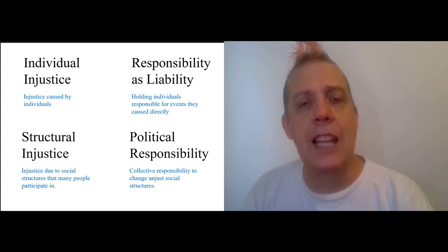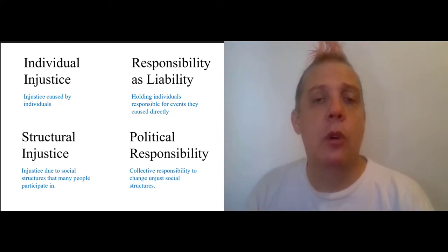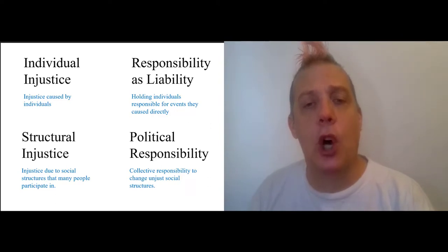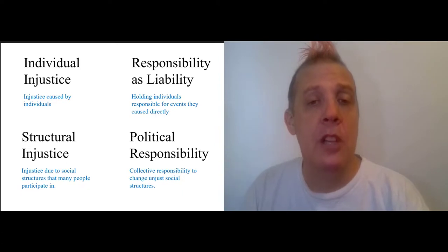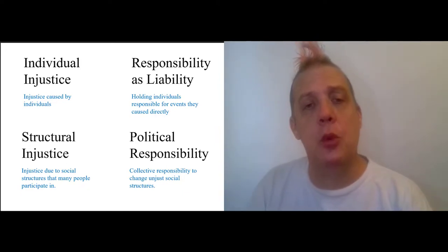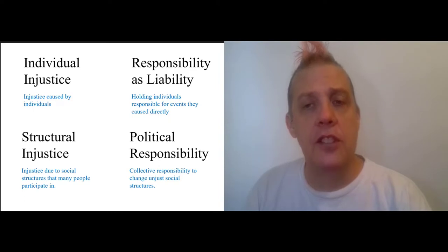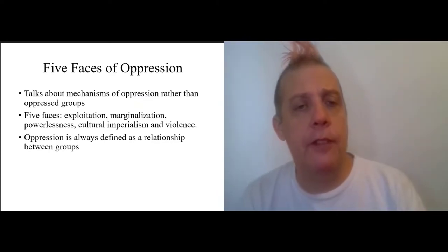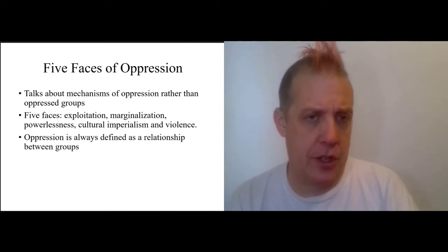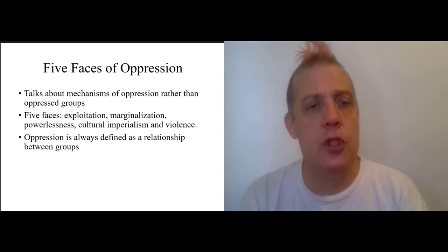Going along with these two notions of justice are two notions of responsibility. There's what she calls the liability model of responsibility — we can think of it as responsibility as liability — and this is when we hold individuals responsible for events that they caused directly. The point is that liability responsibility goes with individual action, whereas political responsibility goes with structural injustice: our duty to deal with injustices caused by social structures.